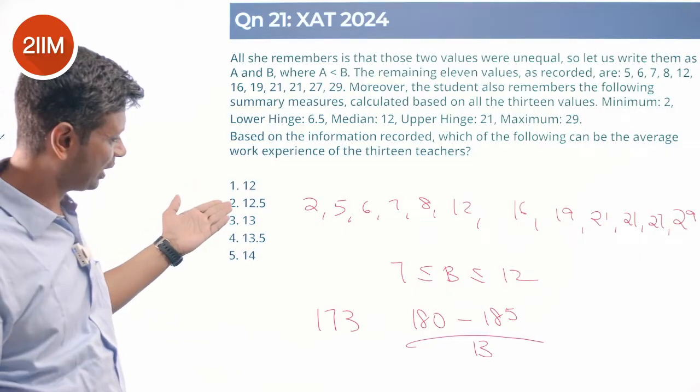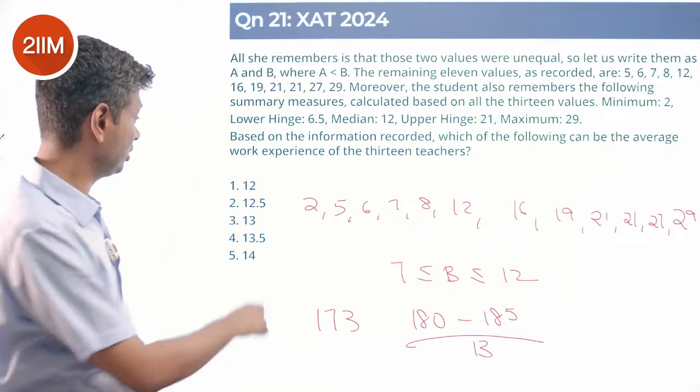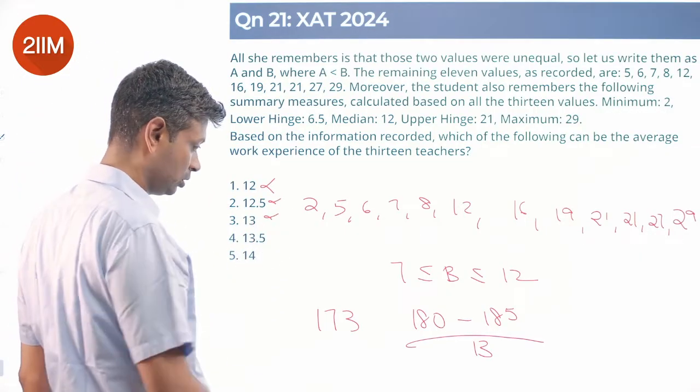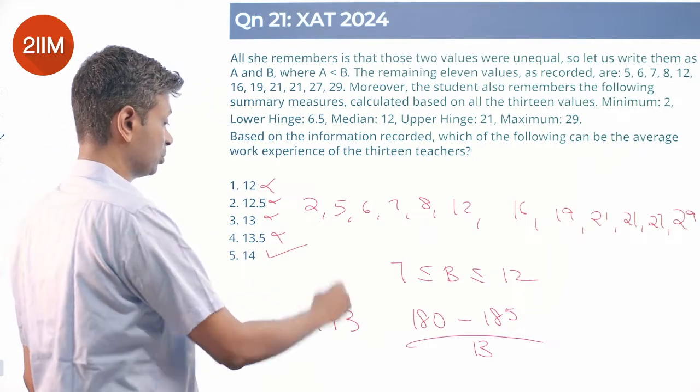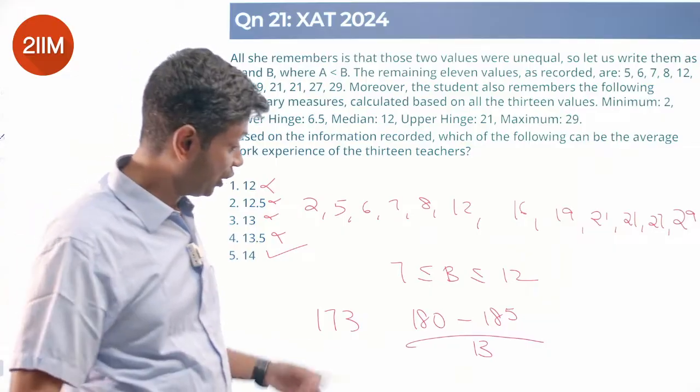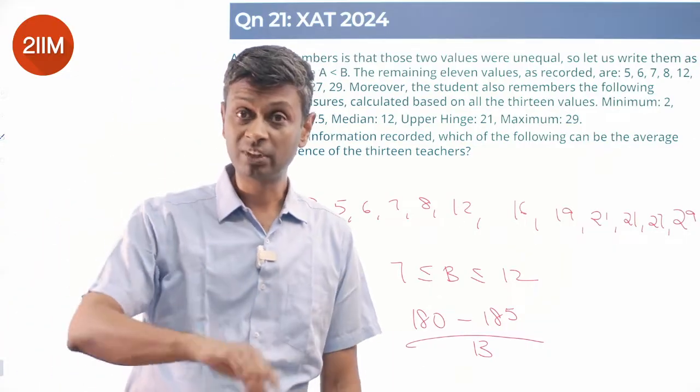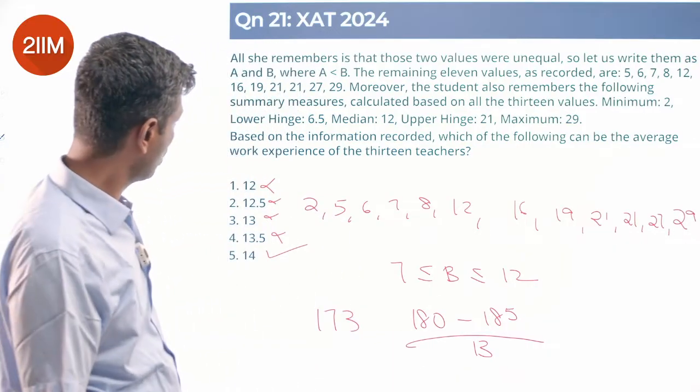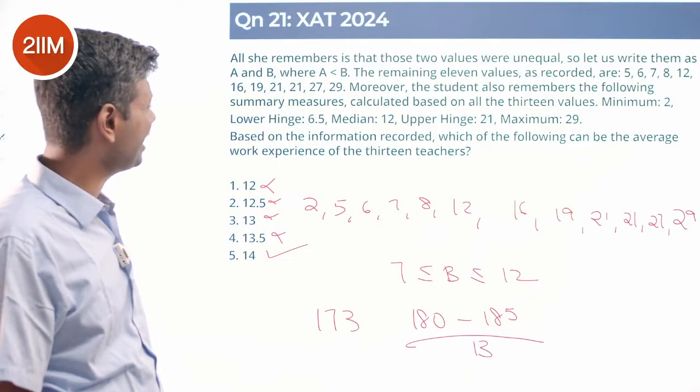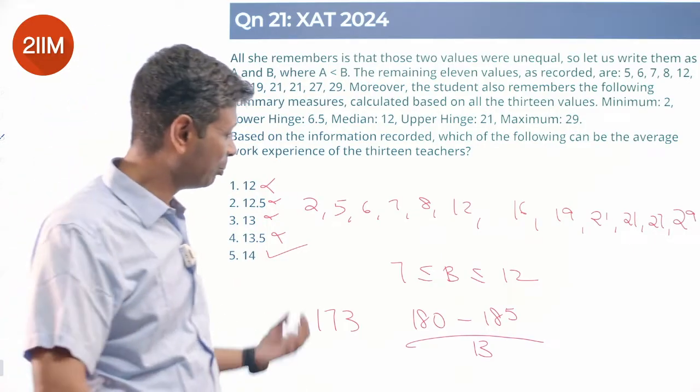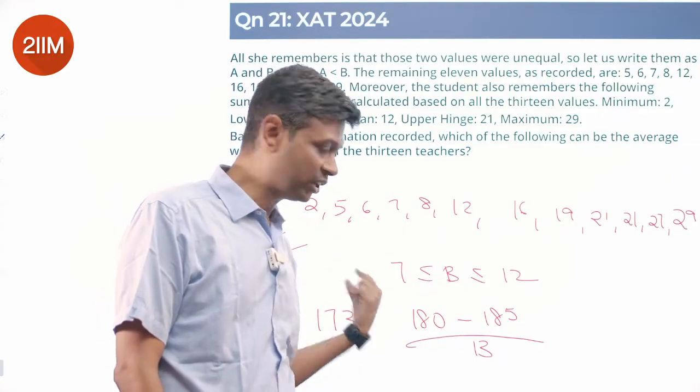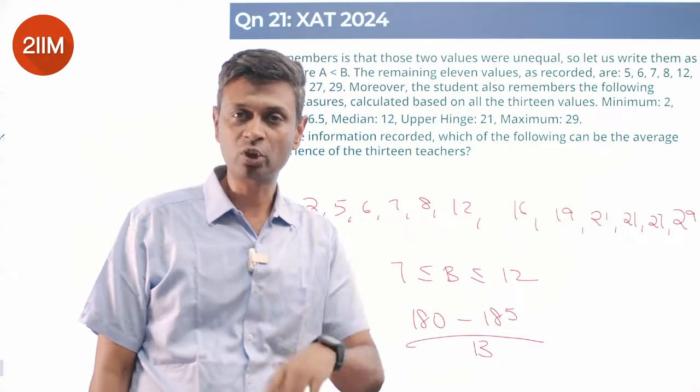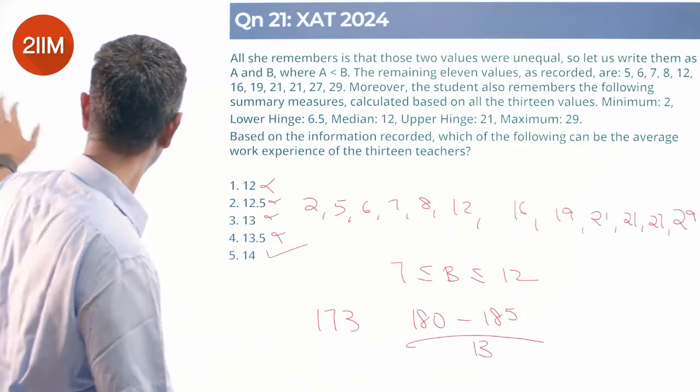It's not 12, it's not 12 and a half. 169 is 13, so it's not this, not this, not this. 13 and a half is not possible. 14 is possible. 13 into 14 is 182. 182 is very much possible, 14 is possible, the rest are not possible. This question says based on the information, which of the following can be the average work experience? B has so many values sitting inside that could be this value that takes us to 14. So 14 is possible, none of the others is possible.